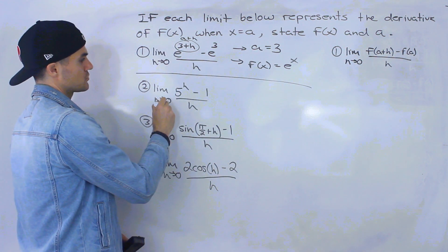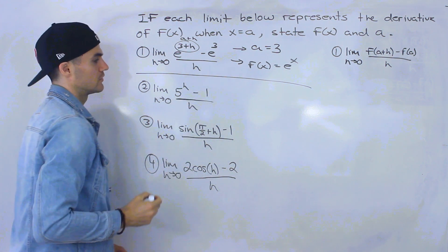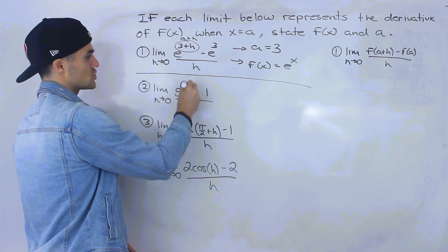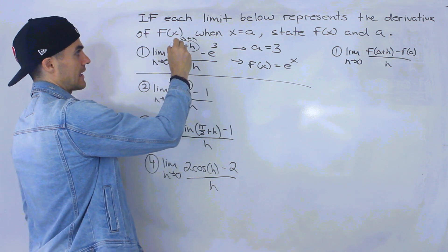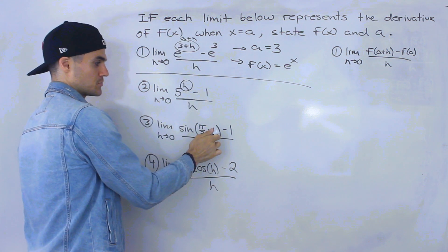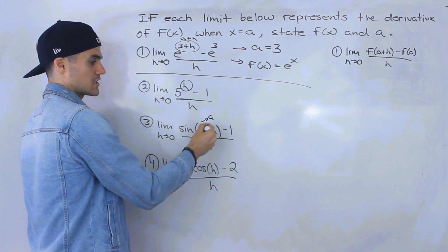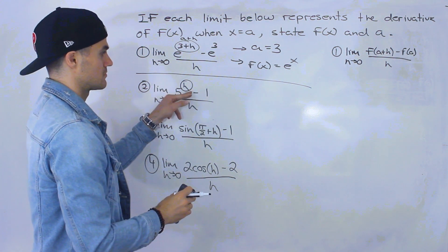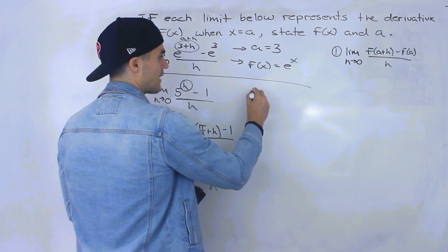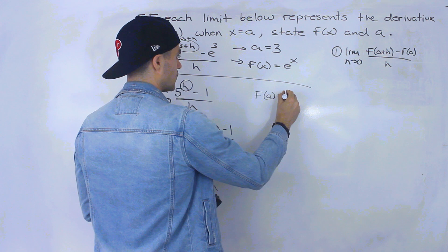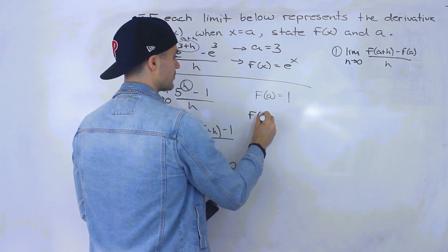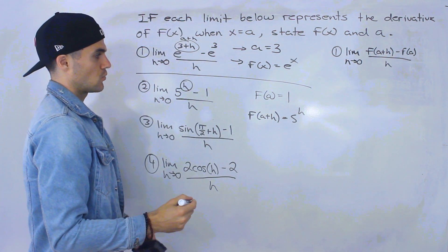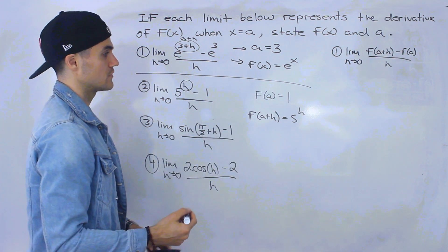Number two: we have the limit as h approaches zero of 5 to the power of h minus 1, all over h. This one is pretty tricky because notice there's just an h by itself — there's no a value plus h. So f(a) has to equal 1, and f(a+h) has to be 5 to the power of h. What function and a value will work for both of these expressions?